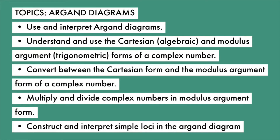Looking at the specification, the topics that will be covered in this chapter are: use and interpret Argand diagrams; understand and use Cartesian and modulus-argument forms of a complex number; convert between Cartesian form and the modulus form of a complex number; multiply and divide complex numbers in modulus-argument form; and construct and interpret simple loci in the Argand diagram. As I mentioned before, when you get to the loci section it can get really challenging. You need a strong imagination to conceptualise the mathematical geometric diagrams.